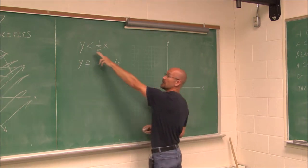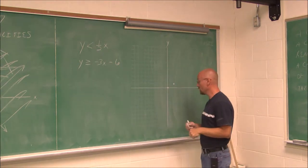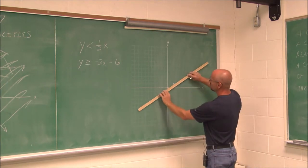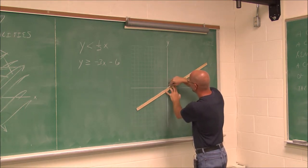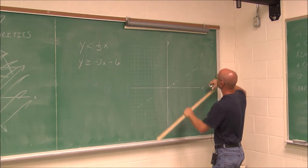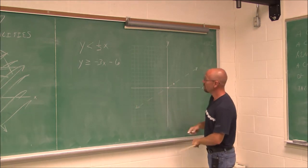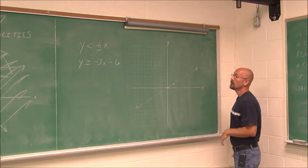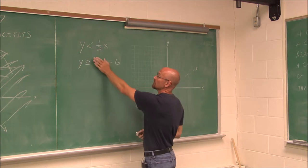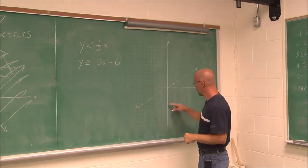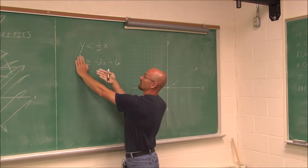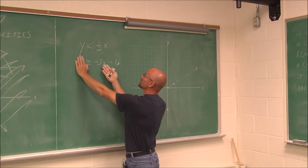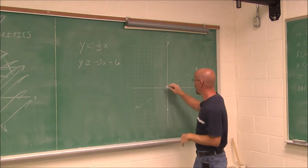Now to graph this line, I identify it's just a less than symbol, so I'm going to use a dashed line. A dashed line means any point on the line would not satisfy the equation. Now for the second inequality, using intercepts: when x is 0, y is negative 6. And finding the x-intercept when y is 0, it would be negative 2, because negative 2 times negative 3 is positive 6, and 6 minus 6 is 0.